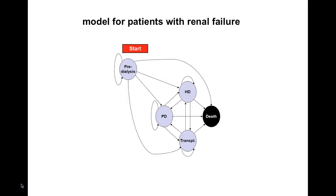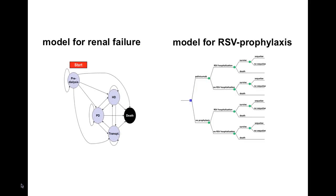Real models are often more complex. This is an example of a model used for a cost-effectiveness analysis for patients with renal failure — it has five states with possible transitions in between. However, a more complex model doesn't need to be a better model. For each arrow representing a possible transition, accurate data for the annual probability must be found. It could be better to use a simple, comprehensive model with high-quality data than a highly complex model with low-quality data. Normally, a simulation model is specific for the patient group and treatment under investigation, and therefore new models have to be developed for each cost-effectiveness analysis.